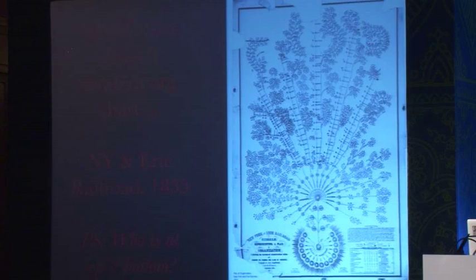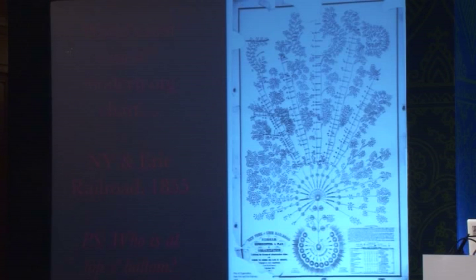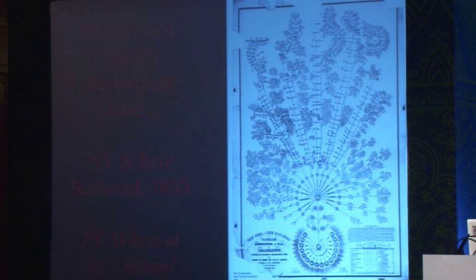One of the org charts doing rounds on the internet is the org chart of the New York and Erie Railroad, back in 1855 — it's probably a beautiful piece of work. It looks like a beautiful sapling. The gentleman who made it, McCallum, used the technology of telegraph at that point to get monthly, weekly, and even hourly updates on train operations. He built this org chart to reflect the way work was actually done in the railroad, and it's known as the world's first modern org chart.